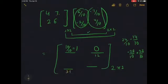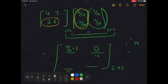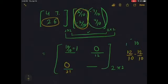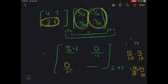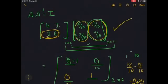Continuing the verification: for row 2, column 1 — 2 times 6/10 is 12/10, and 6 times negative 2/10 is negative 12/10, which is 0. For row 2, column 2 — 2 times negative 7/10 is negative 14/10, and 6 times 4/10 is positive 24/10, which simplifies to 10/10 = 1. So the result is the identity matrix, confirming this is the correct inverse.